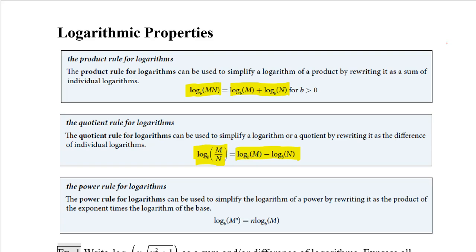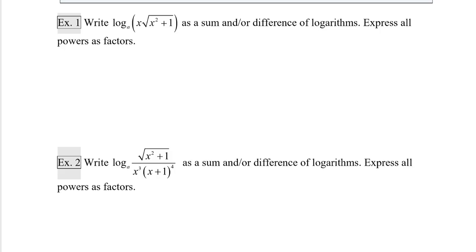Then we have the power rule for logarithms, which says if we have log base b of m raised to the n, we can take that power and make it a factor in front. This is equal to n times log base b of m. So first we just need to practice using these properties to pull apart logs and to put them back together.